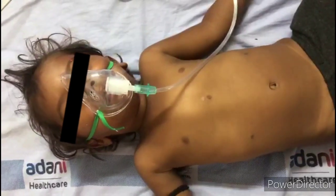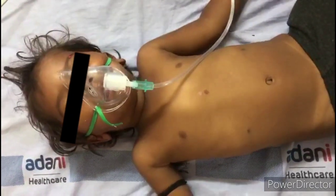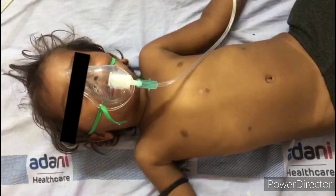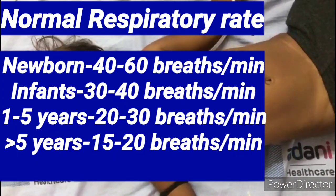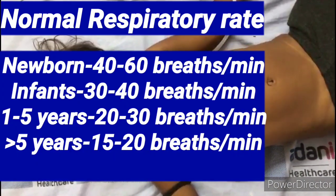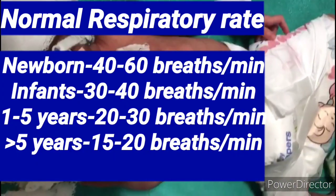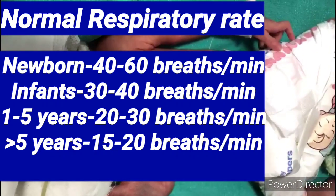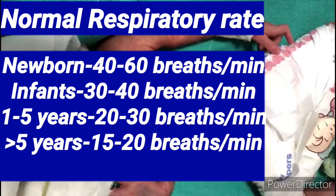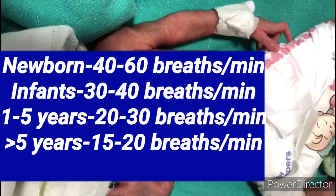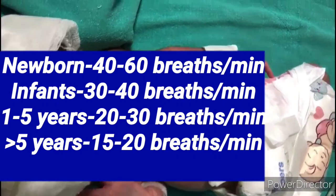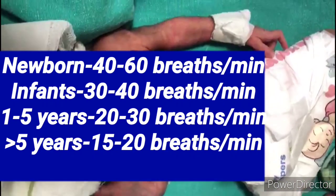For respiratory rate, we calculate for a full one minute. We remove the clothes from the chest and count chest rise for one full minute. Normal respiratory rate in newborns is 40 to 60, in infants 30 to 40, in 1 to 5 year age group 20 to 30, and more than 5 years 15 to 20 breaths per minute.